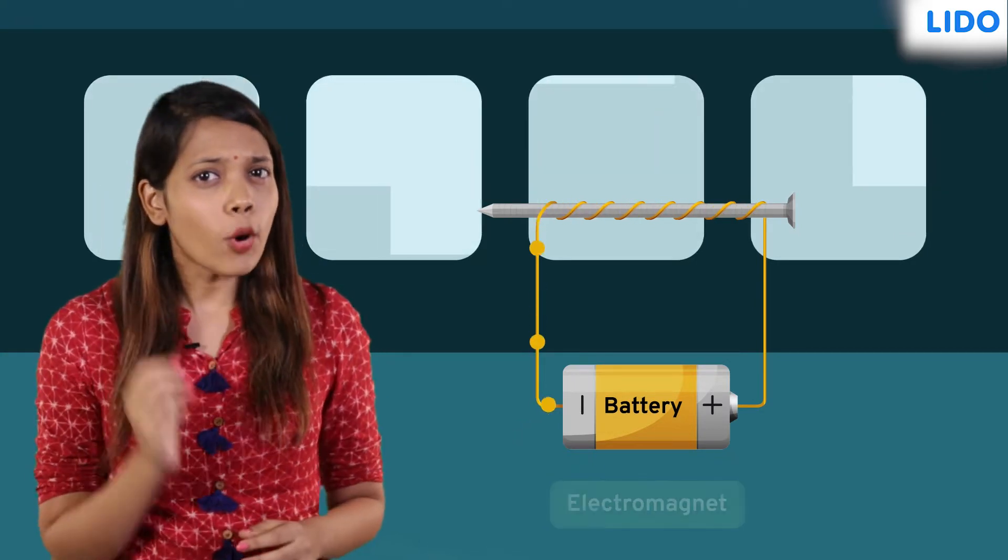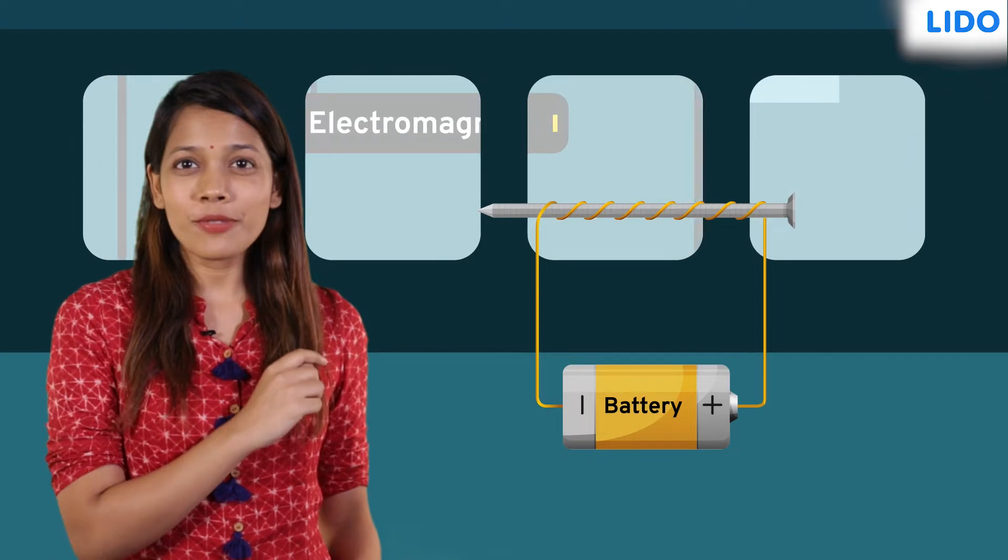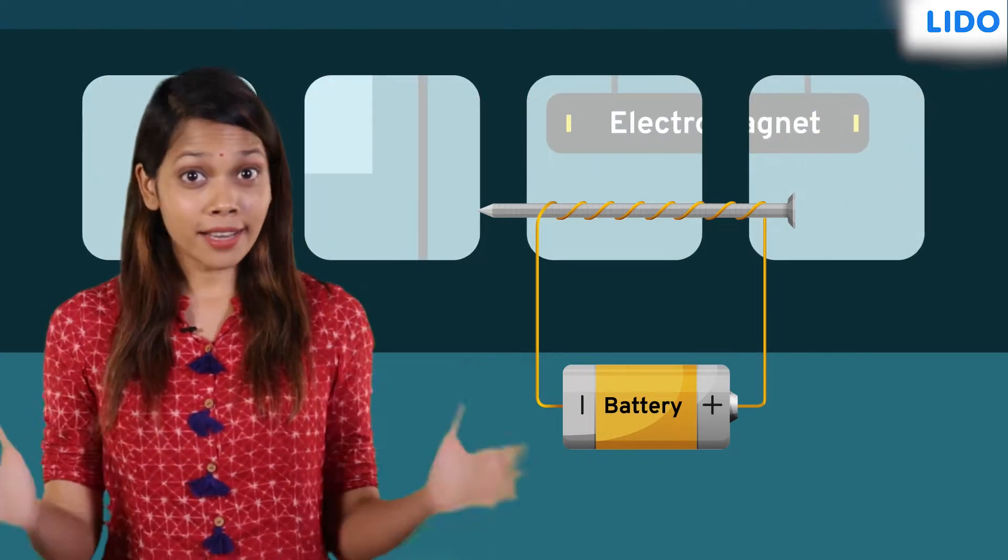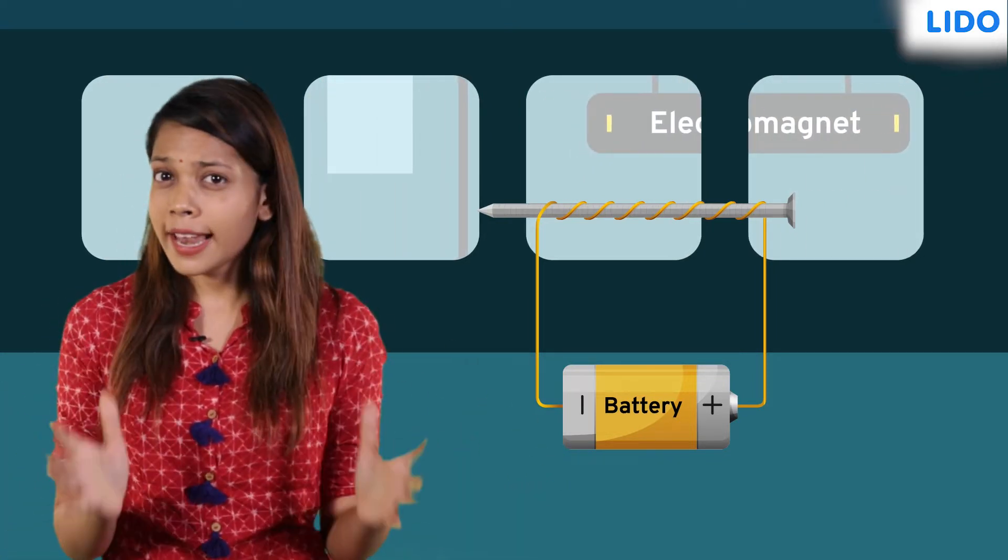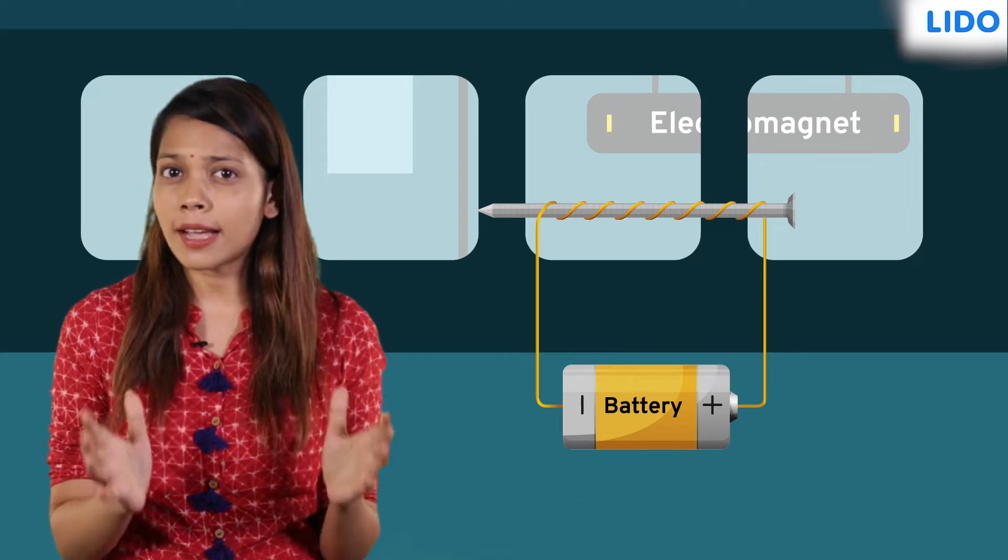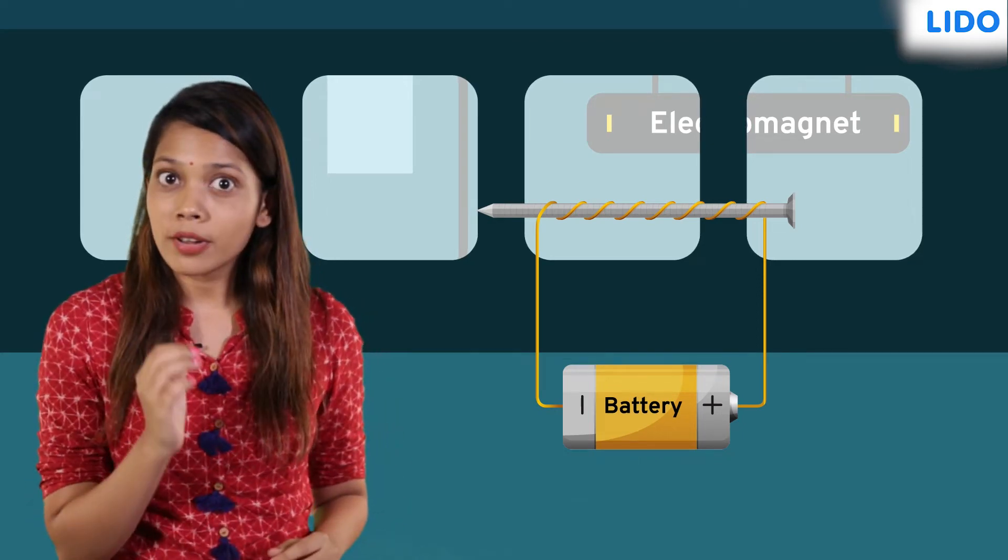And this is also the name of our next stop, electromagnet. Here, we are going to find out if electromagnets have a north and south pole, just like natural magnets.